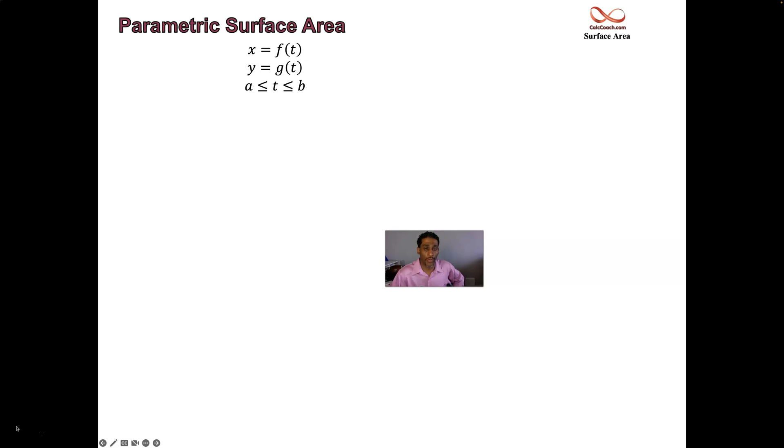We have ds, which is our small piece of arc length. That's part of the calculation both for arc length and for surface area. When y is a function of x, it's 1 plus y prime squared under a radical. When x is a function of y, it's 1 plus x prime squared under the radical, and that integral is with respect to y. But when you have x as a function of t and y as a function of t, it is dx/dt squared plus dy/dt squared all underneath a radical. And your integral is with respect to t.